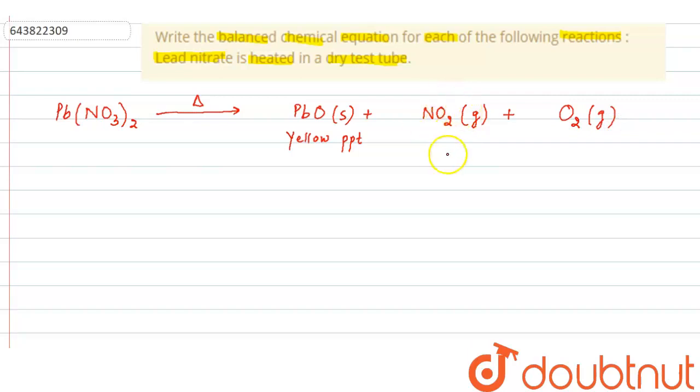And also, reddish brown gas will be observed here due to NO2, that is nitrogen dioxide gas. So the nitrogen dioxide gas is reddish brown gas.